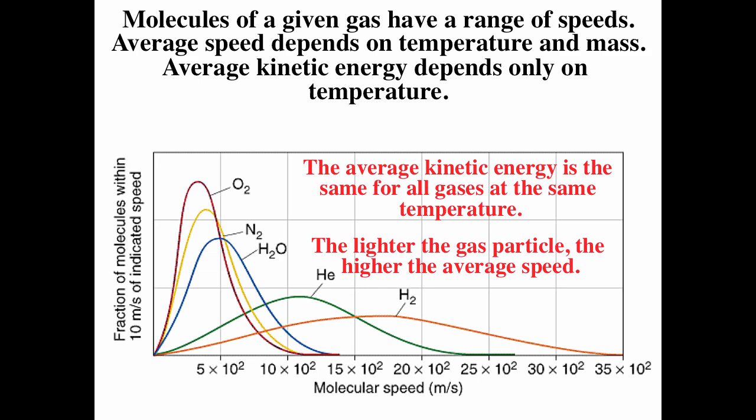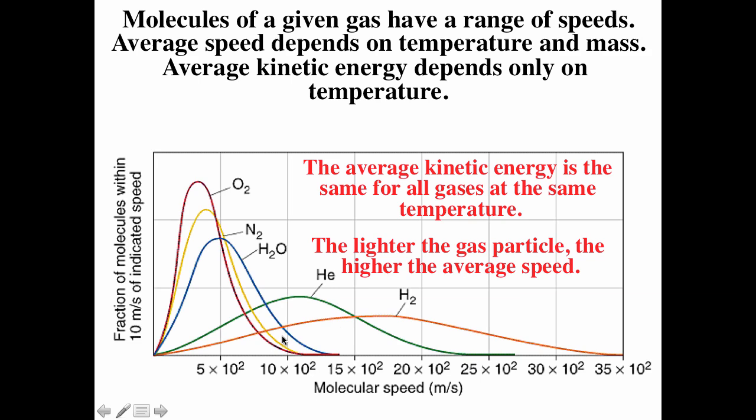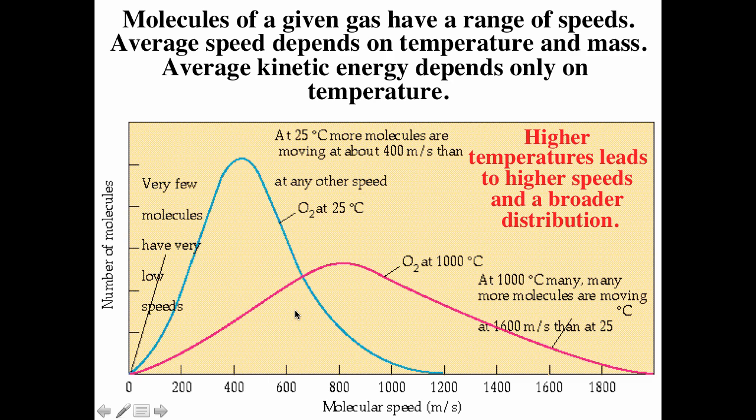We can also look at these distributions as a function of temperature. Here's oxygen at 24 degrees Celsius and oxygen at 1,000 degrees Celsius. At higher temperature you have a larger average kinetic energy. Going to higher temperature, you see a higher average speed and a broader distribution — the same trend as going to a lighter particle.